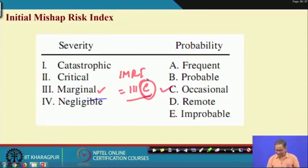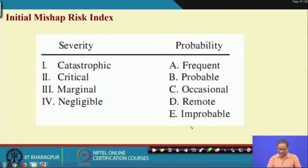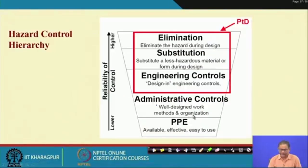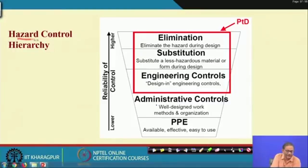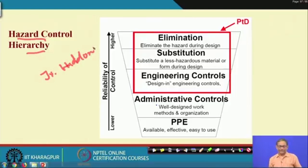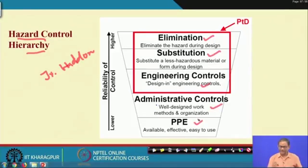Once you have the risk index, the next step is how to reduce the risk. This uses the concept of hazard control hierarchy, developed by Haddon. The five stages are: elimination, substitution, engineering control, administrative control, and personal protective equipment (PPE). Elimination means eliminating the hazard during design — this is the concept of Prevention Through Design (PTD).